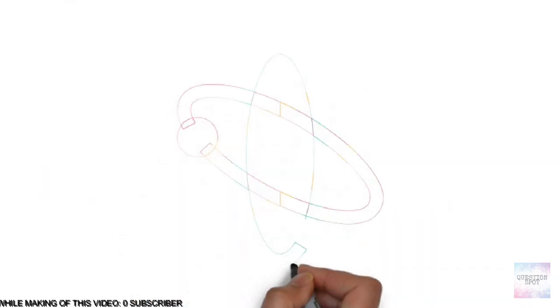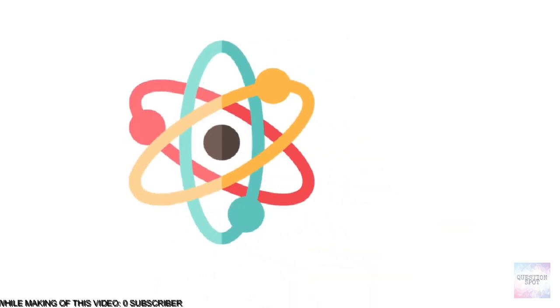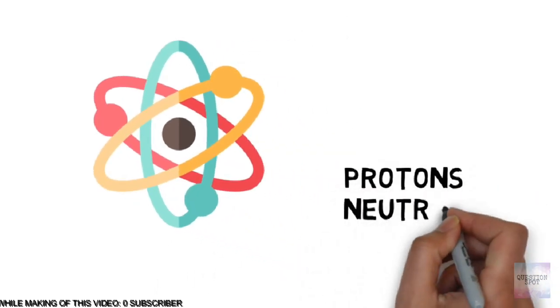First we must know about what are bonds between atoms. Atoms consist of protons, neutrons, and electrons.